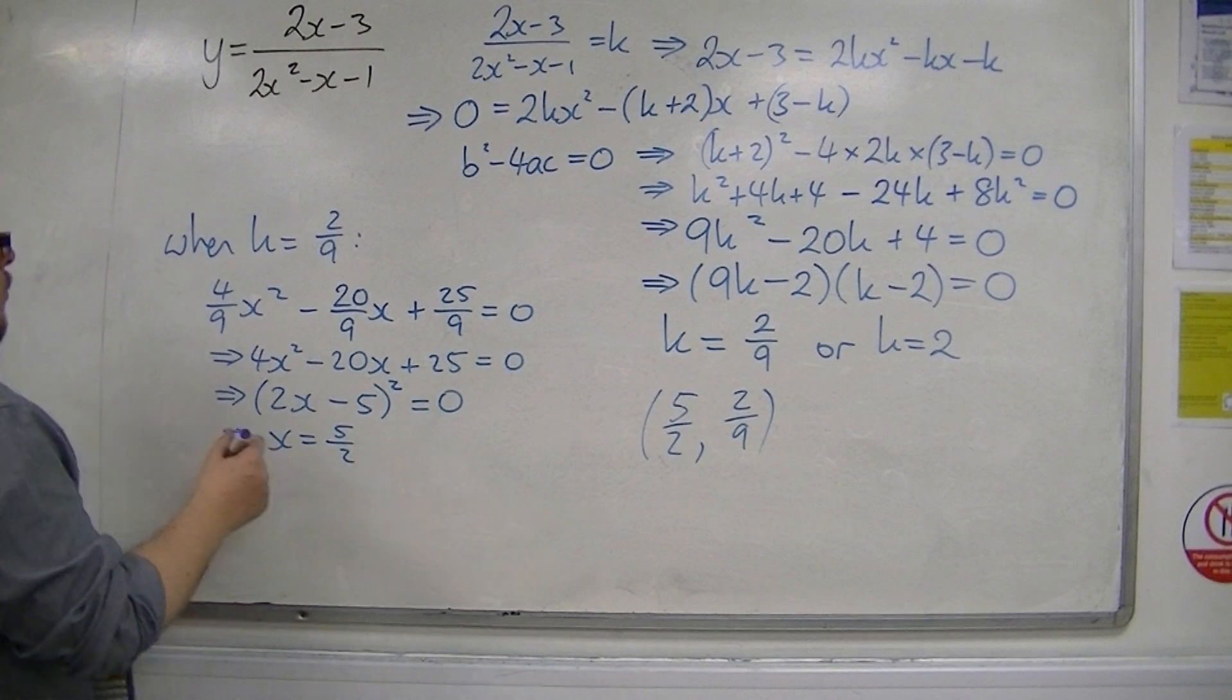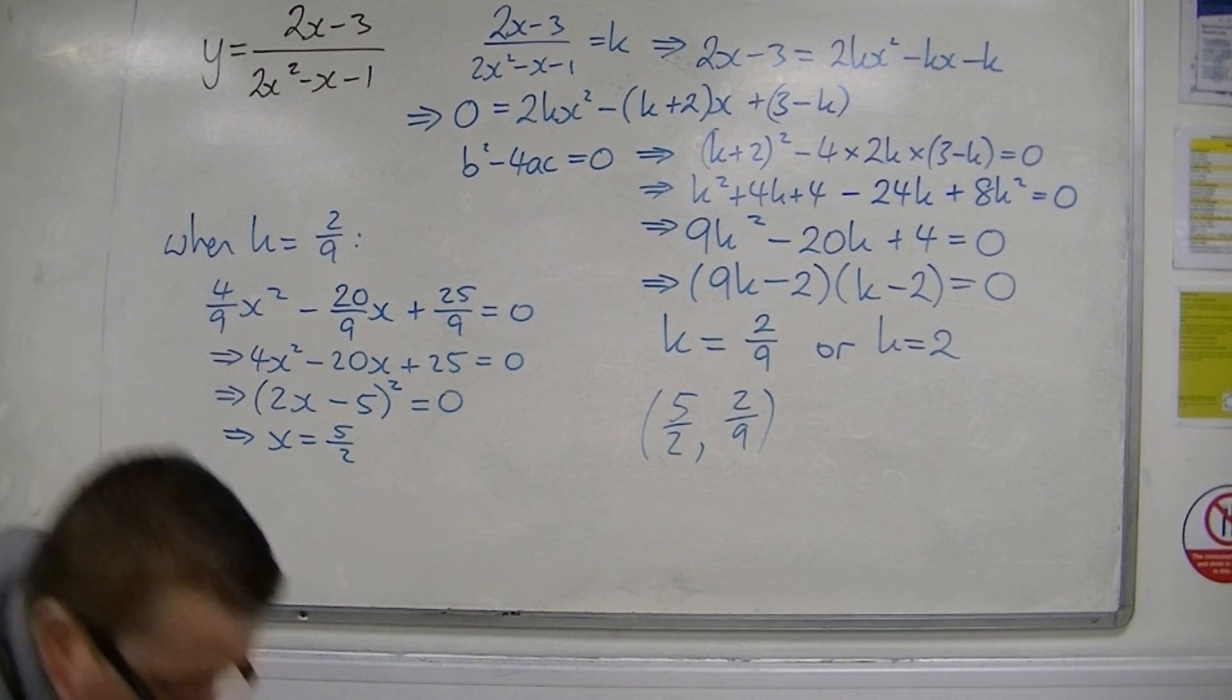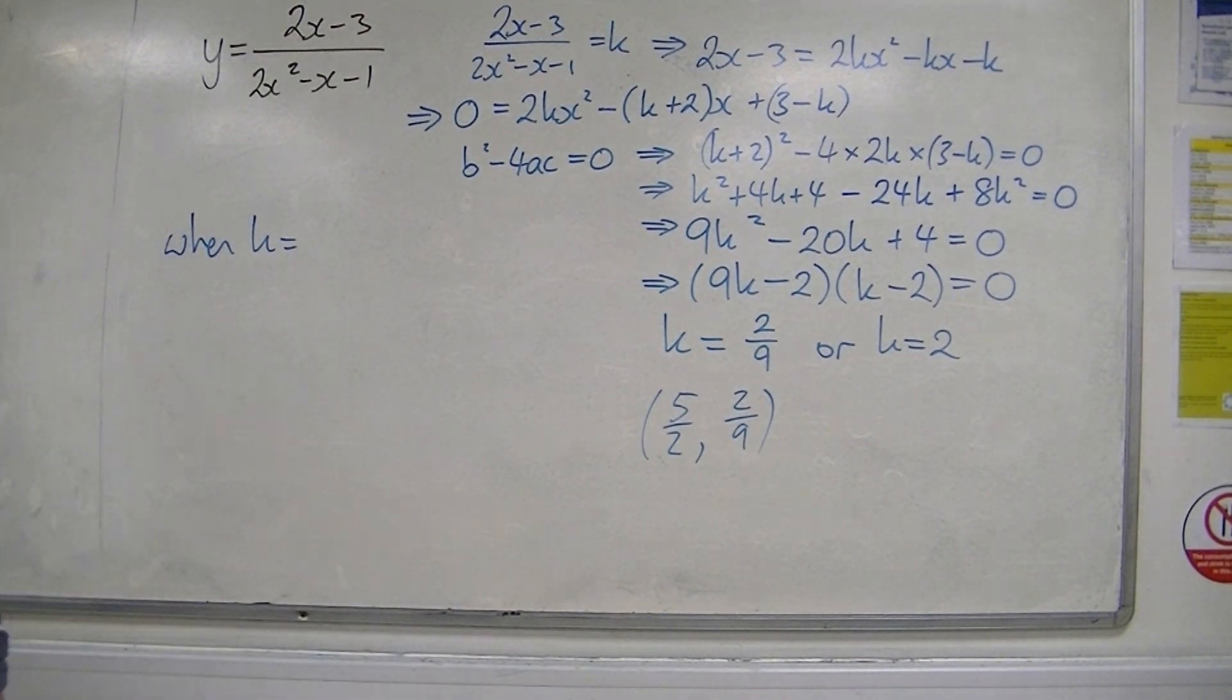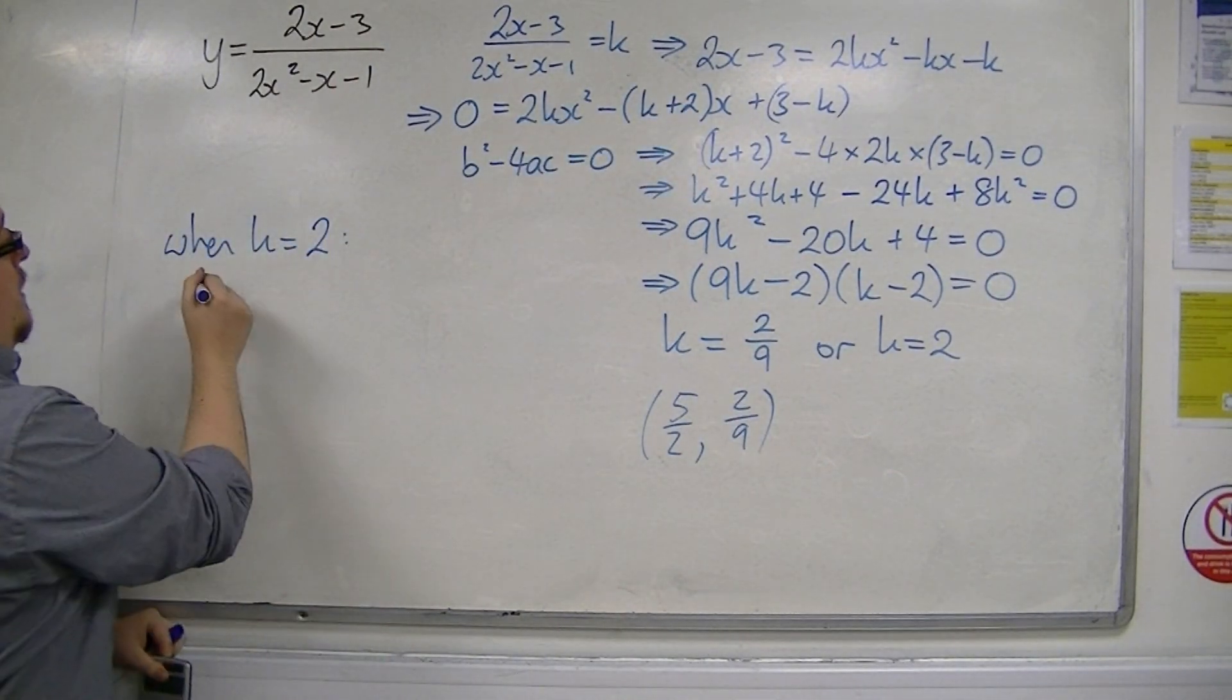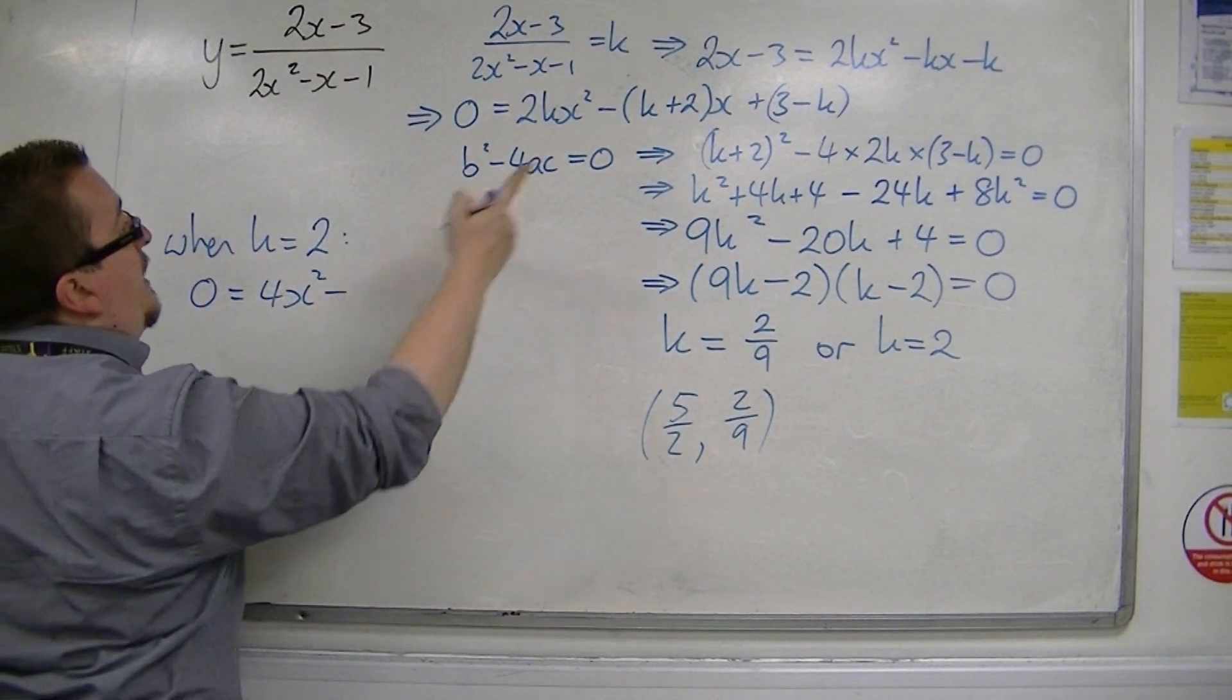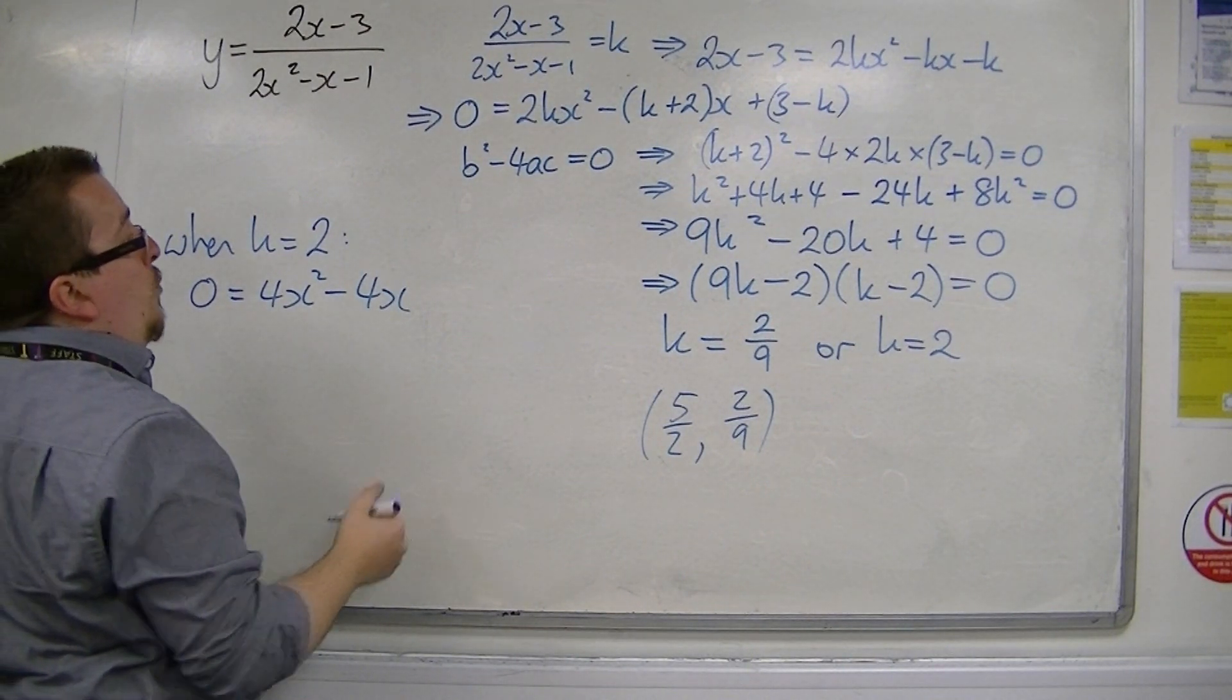Now, when k is 2, substituting back into this one, we're going to have 0 is equal to 4x squared, take away 4x. 3 take away 2 is 1, so plus 1.